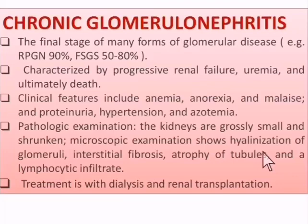It is characterized by progressive renal failure, uremia, and ultimately death if not treated. Clinical features are the same as chronic kidney disease or uremia, and include anemia, anorexia, malaise, proteinuria, hypertension, etc.